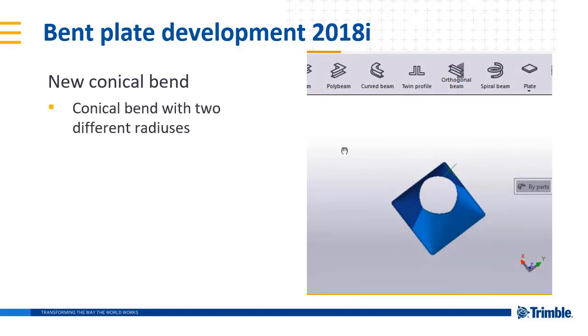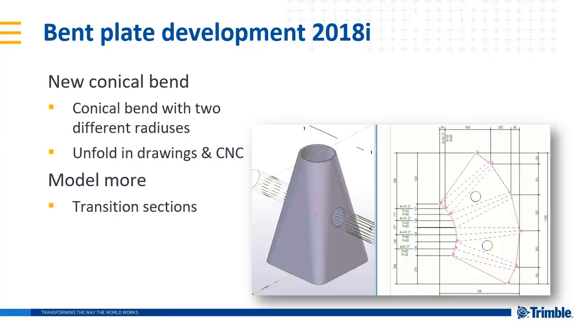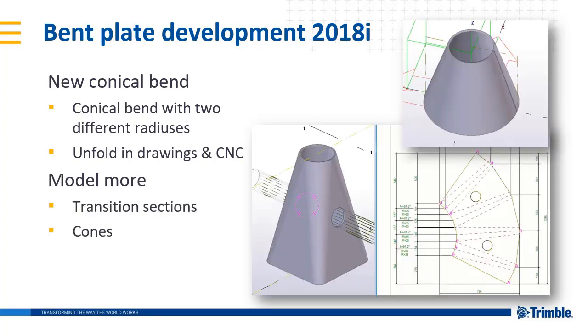The conical bend has two different radiuses at each end. It can be unfolded in drawings and CNC, and this allows you to model much more, including transitional sections as well as cones.